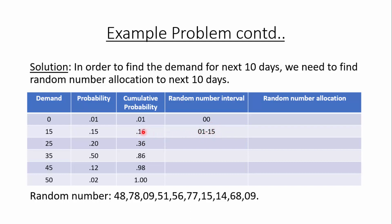Continuing: the third row starts at 16 and goes up to 35 (cumulative 0.36, leaving out 36). The fourth row runs from 36 to 85 (cumulative 0.86, leaving out 86). The fifth row runs from 86 to 97 (cumulative 0.98, leaving out 98). The sixth row covers 98 and 99. We need to be very careful while calculating this random number interval.